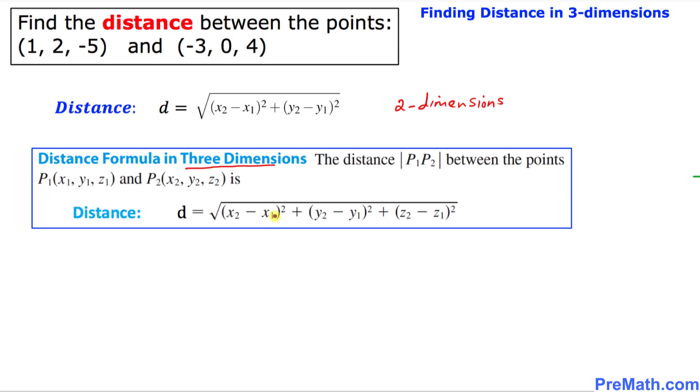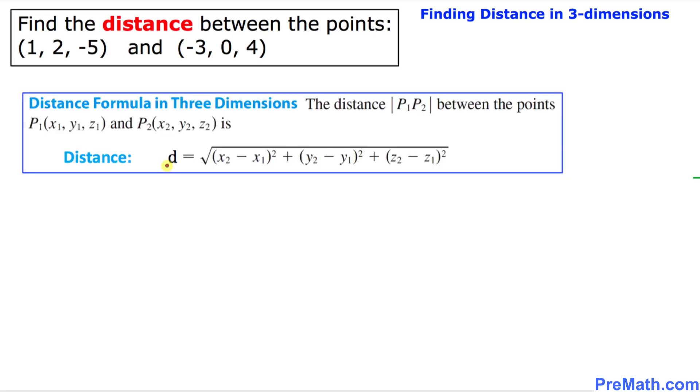Just simple as that. So thus the distance in three dimensions is simply the square root of (x2 minus x1) squared plus (y2 minus y1) squared plus (z2 minus z1) squared.